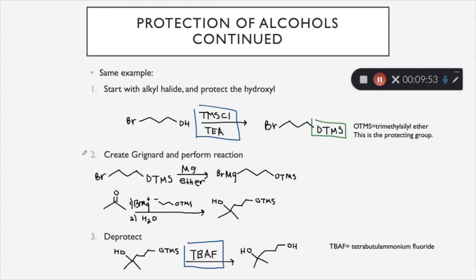So step two is to create a Grignard and perform a reaction. So here we have our alkyl halide with the protecting group on it. So we basically just turned this hydroxyl into something else that won't react. And then we treat it with magnesium to produce the Grignard. So this right here is the Grignard. And then we are going to perform the reaction to give us our desired product. So we have our Grignard here and we have water. And that will give us our desired product. But we still have this protecting group stuck on there.